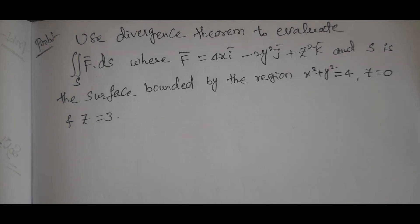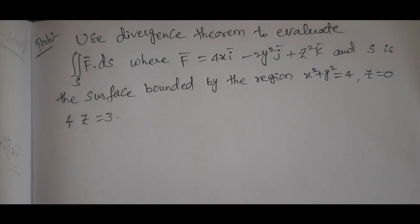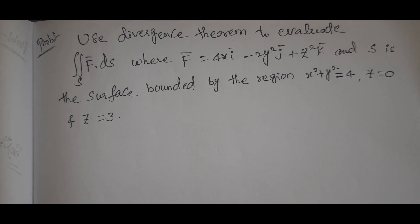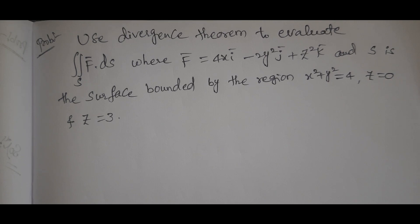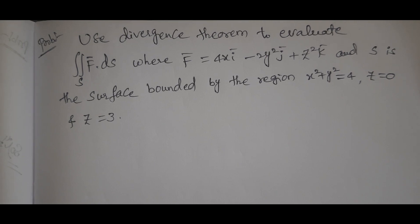Use the Divergence Theorem to evaluate the integral ∫∫_S F̄ · dS, where F̄ = 4xī − 2y²j̄ + z²k̄, and S is the surface bounded by the region x² + y² = 4, z = 0 and z = 3.